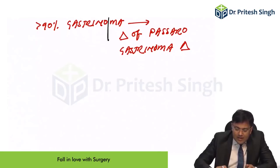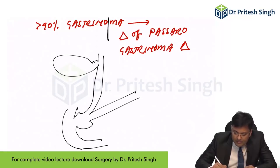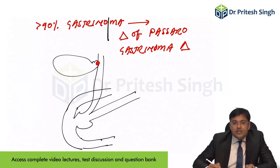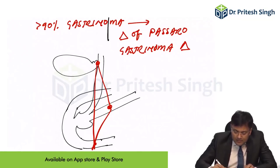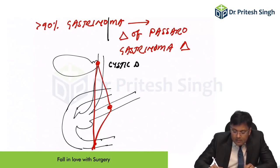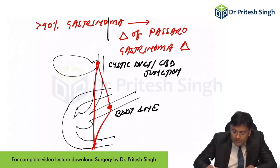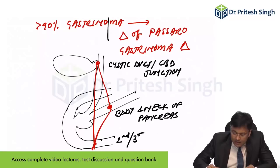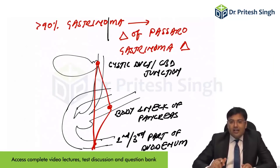The boundaries of the Triangle of Passaro (Gastrinoma Triangle) are: 1) cystic duct–CBD junction, 2) body and neck of the pancreas, and 3) second and third parts of the duodenum. 90% of gastrinomas are located within this triangle.